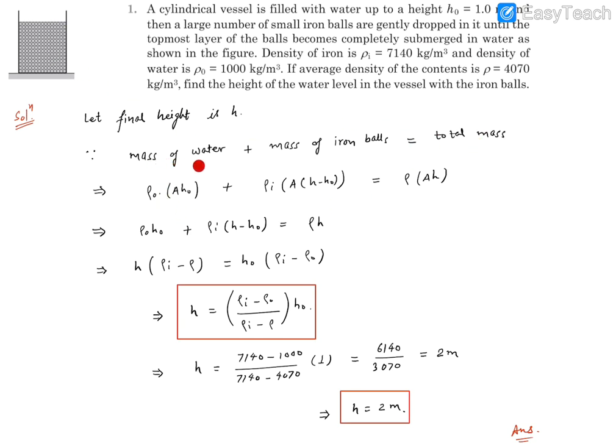Now, how much is the mass of the water? Initially it was the same that will remain later. Density times volume. Let the cross-sectional area of this container be A. Earlier height was H0, so A H0 was the initial volume. The density of water is ρ₀, so we can multiply them together. That is the total mass of the water.